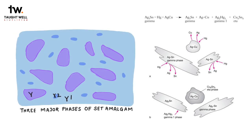While crystals of the gamma 1 phase are being formed, the amalgam is relatively soft and easily condensable. It is also carvable. As time progresses, more crystals of gamma 1 are formed; the amalgam becomes harder and stronger, and it is no longer condensable or carvable.